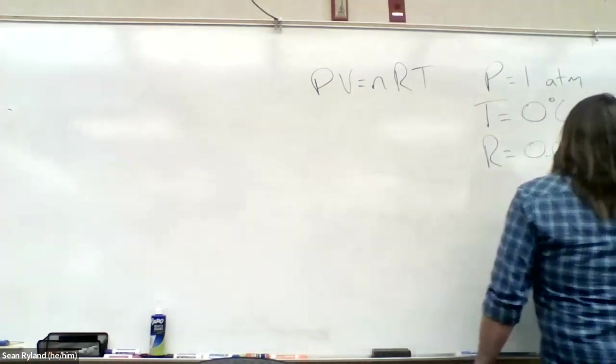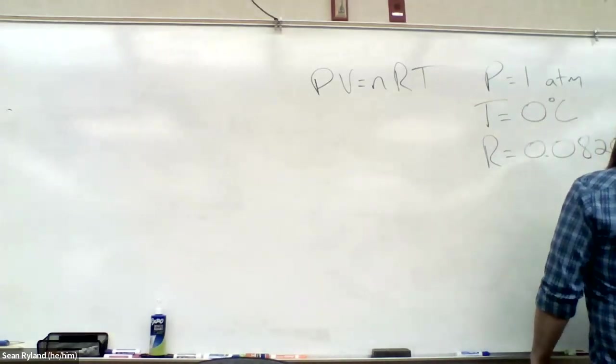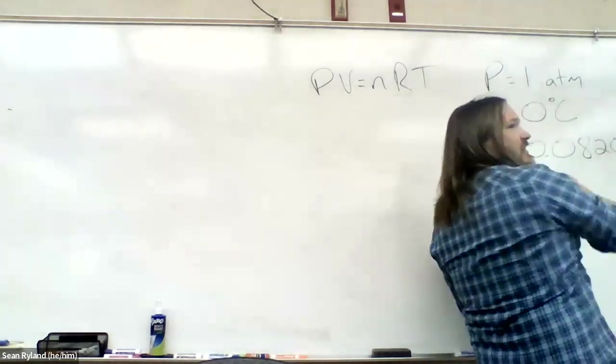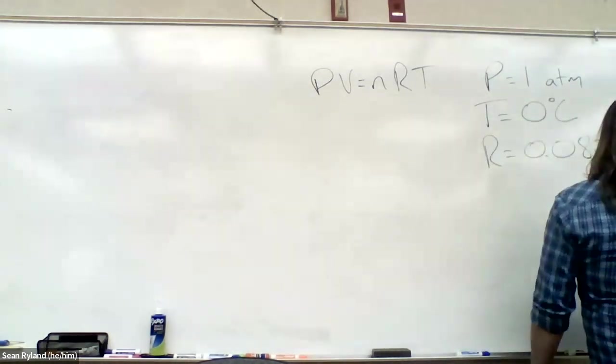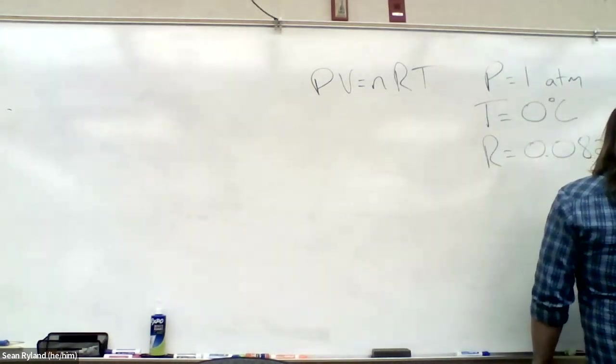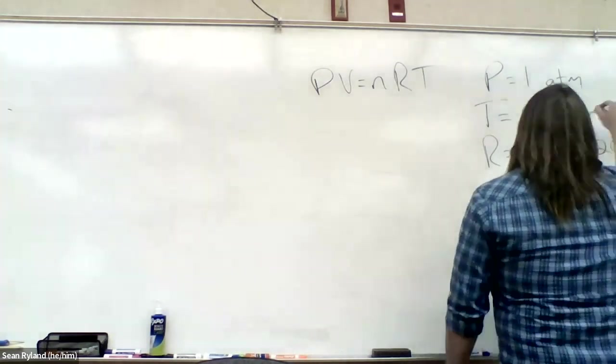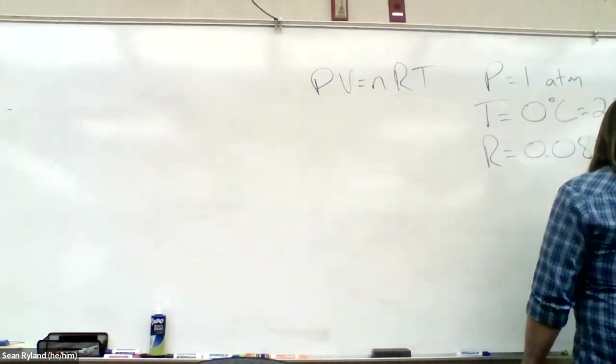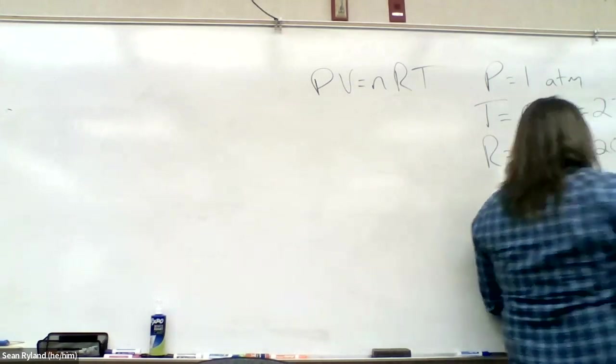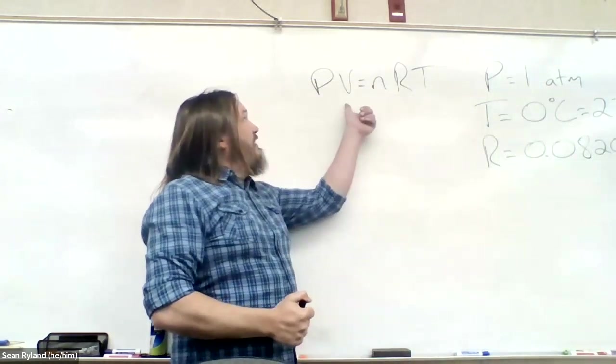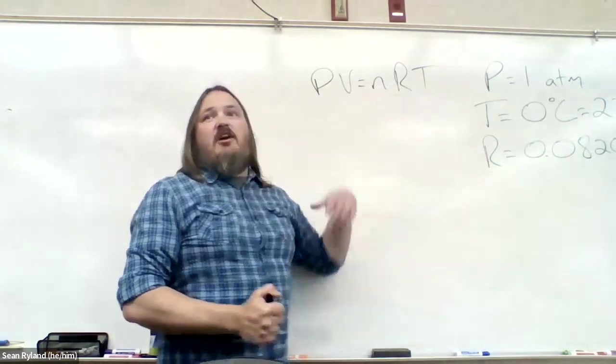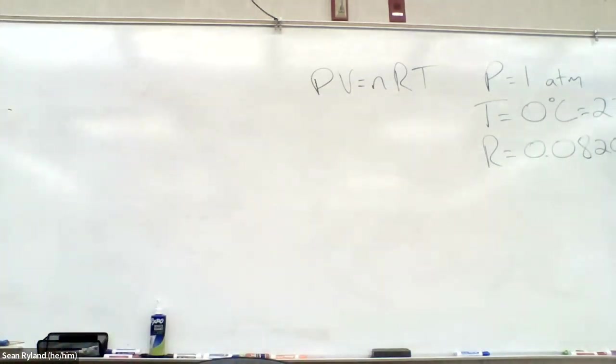Remember that our units on R will always tell us what everything else should be in: liters times atmospheres over moles times Kelvin. So we've got three of the five pieces. We've got a volume, it's just not in liters. How do we get from 5.0 million cubic feet to liters?